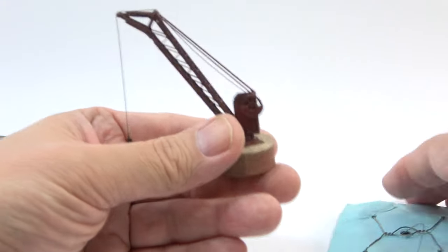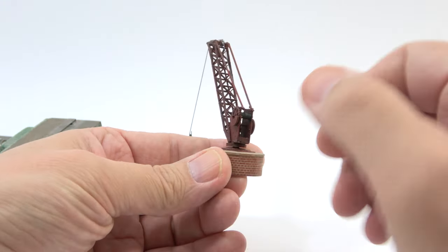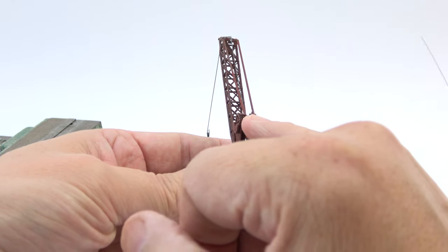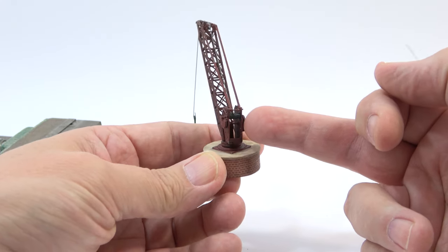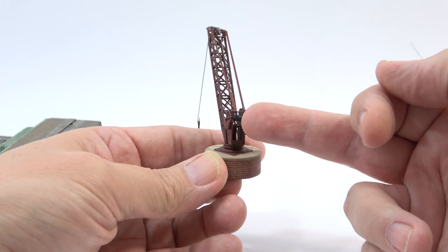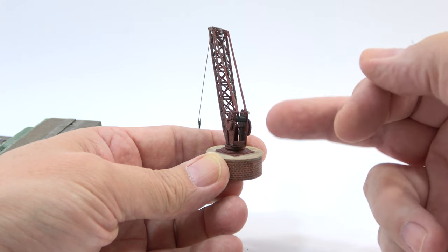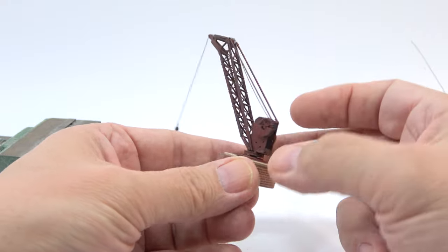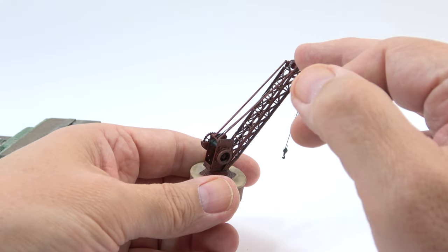So for the crane what I've done is I've tucked it into the spool at the back, drilled a little hole, bent the end of the wire over, tucked it in, super glued it in place, run it up the jib and it's nice and straight.